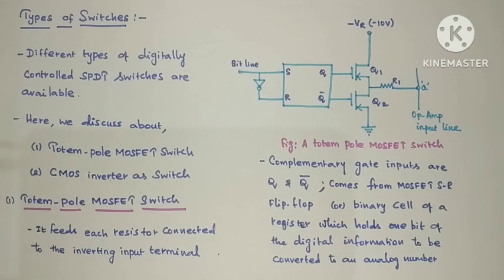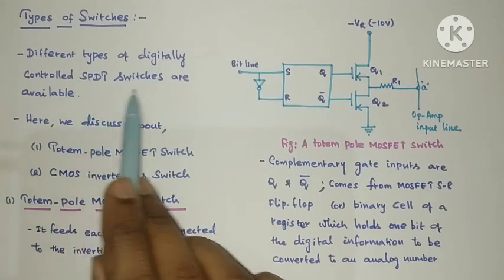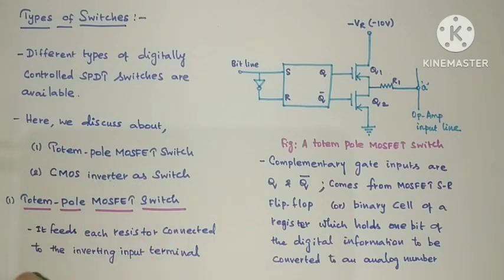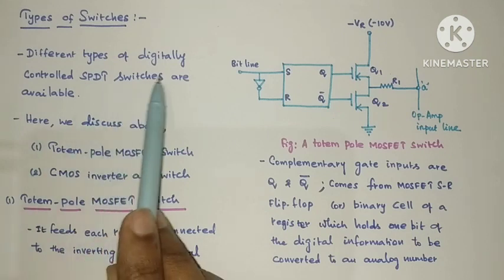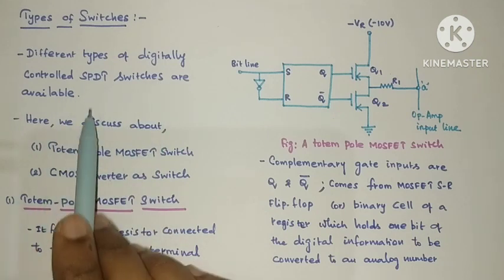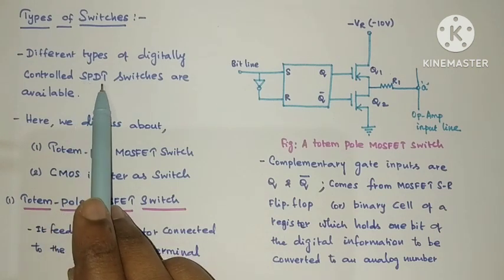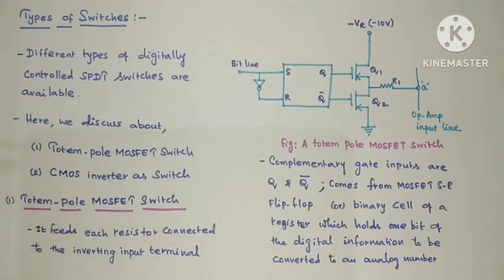The type of switch used in a digital to analog converter is a digitally controlled SPDT switch. SPDT stands for Single Pole Double Throw switch — that is the full form for SPDT.